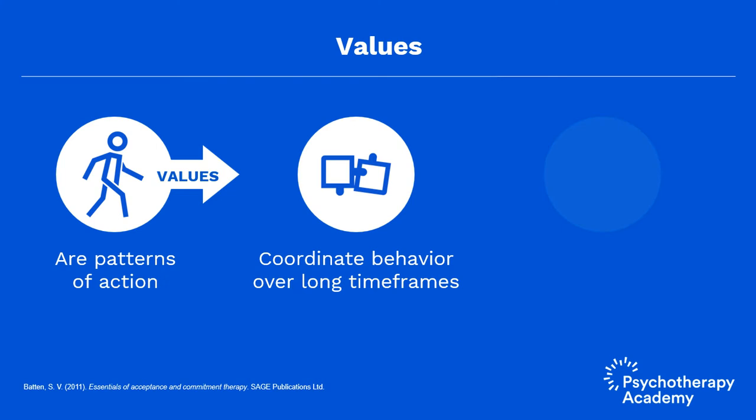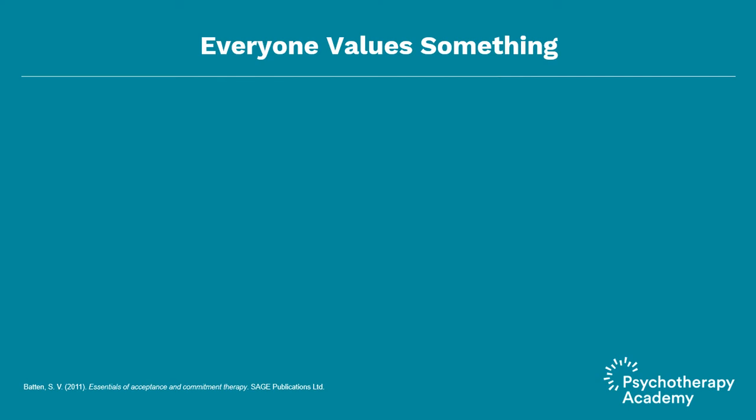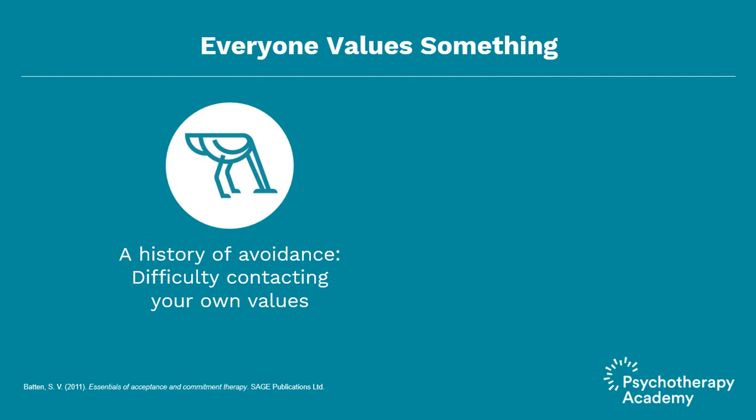Values are considered to be relatively stable orientations that are chosen purposefully by the individual and are not determined by feelings that may change from moment to moment. Over the course of your life, in general, although there may be some change, the type of person that you want to be and the things that are important to you are relatively stable. Values aren't defined by fleeting thoughts or reactions about thoughts, feelings, or memories. And everyone values something.